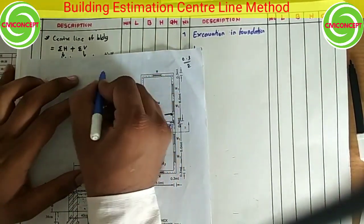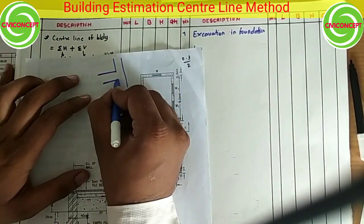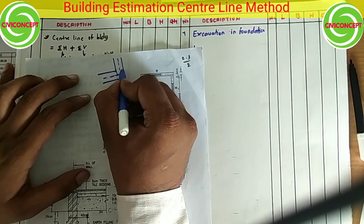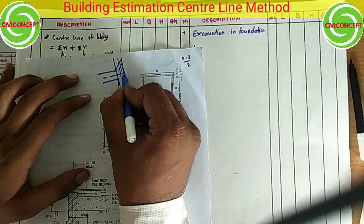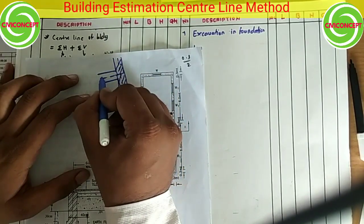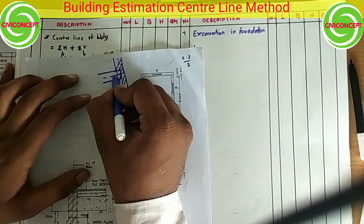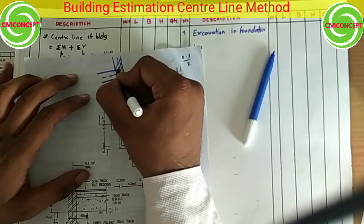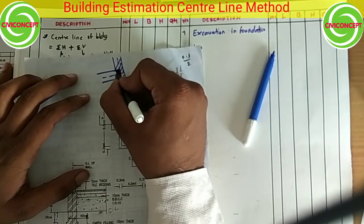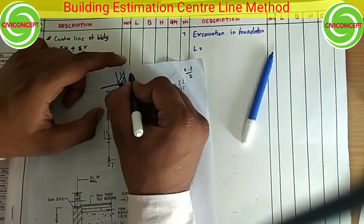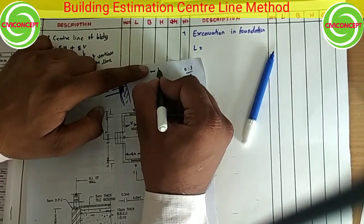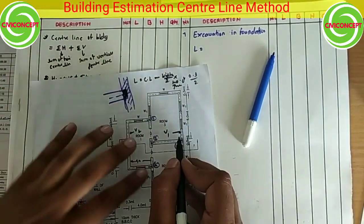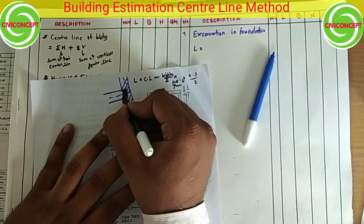Why do we detect T-junctions? When we add center line lengths, the area at a T-junction is covered twice — the width is repeated. So we must deduct that overlapping portion. The formula is: Length = Center Line − (width ÷ 2) × number of junctions. We have 4 junctions and the width of excavation is 1 meter.